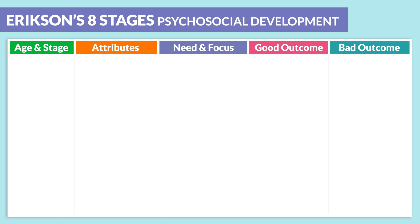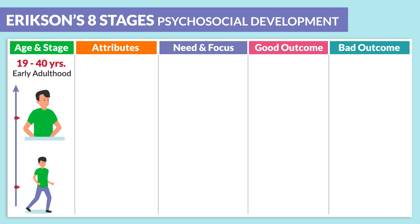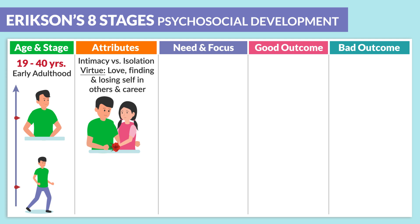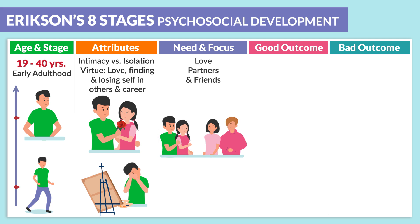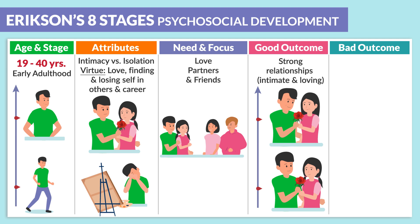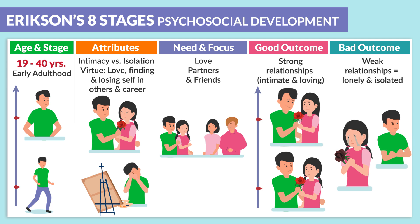The next age group is 19 to 40 years old — early adulthood. The attributes are intimacy versus isolation. The virtues are love, finding and losing self in others, as well as finding and losing yourself within your career. The need and focus is love with partners as well as friends. The good outcome is strong, intimate, and loving relationships. The bad outcome is weak relationships — once again, lonely and isolated.